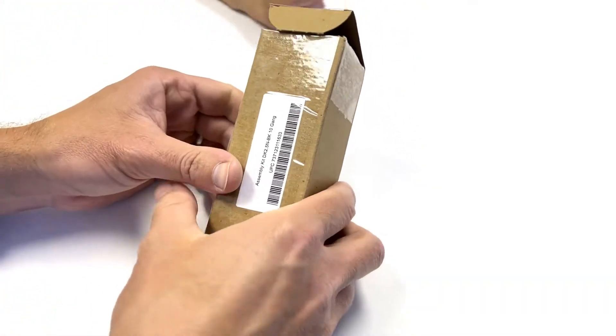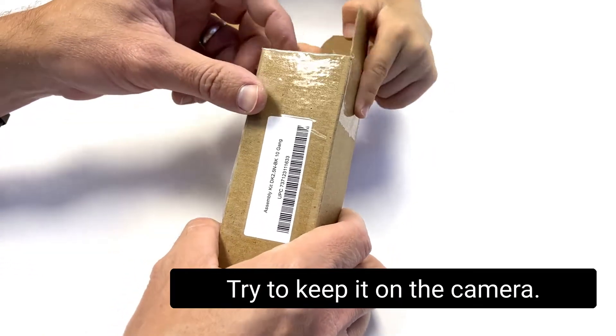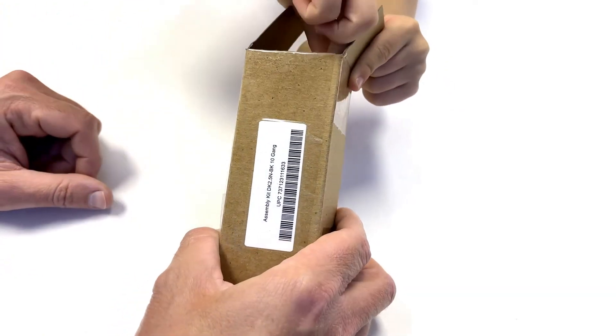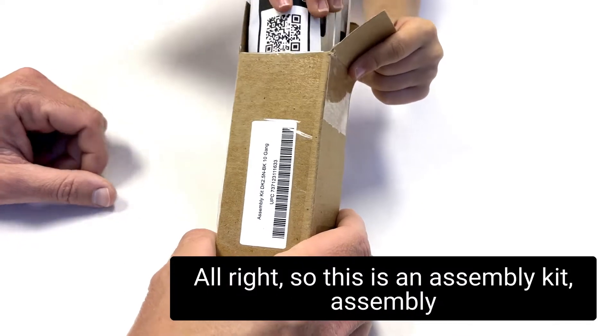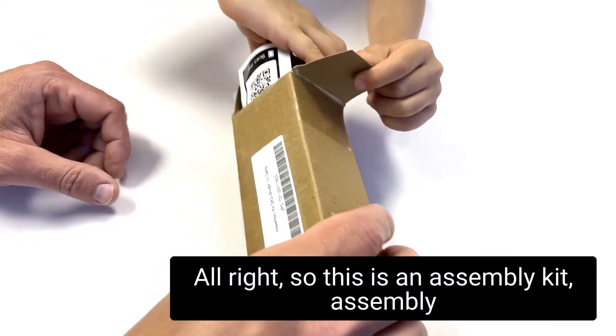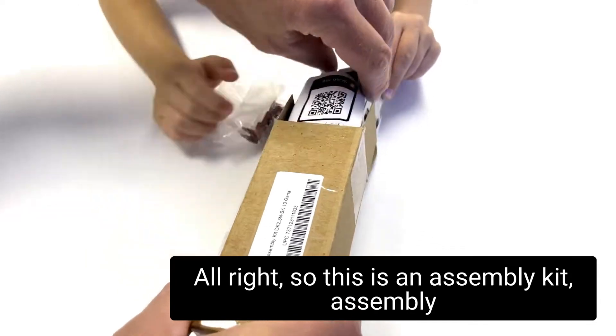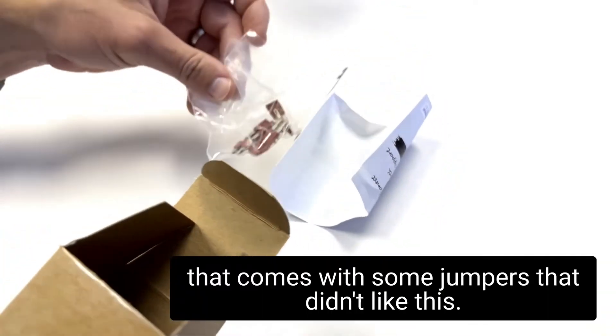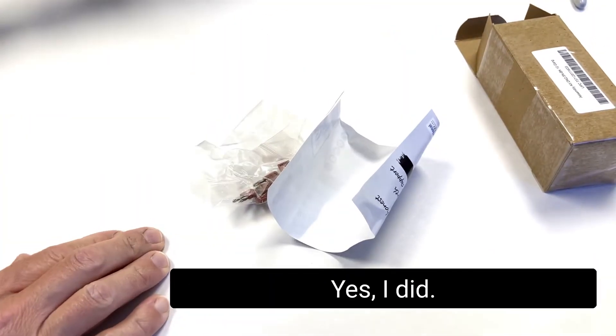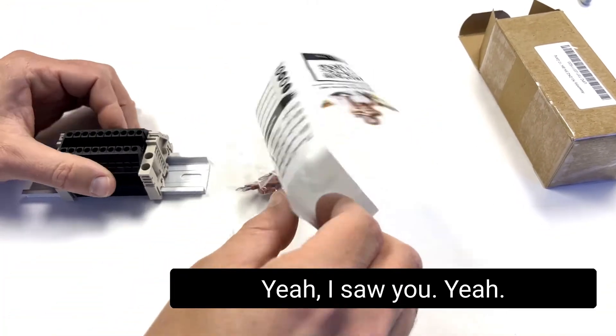See what's in there. Let me try to keep it on the camera. There we go. Alright. So this is an assembly kit. So that means it's assembly that comes with some jumpers. Dad, did you make this? Yes, I did. I did make this. Yeah, I saw you. Yeah.